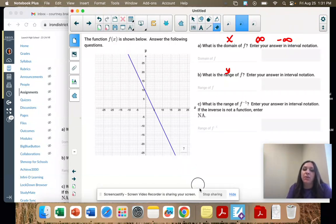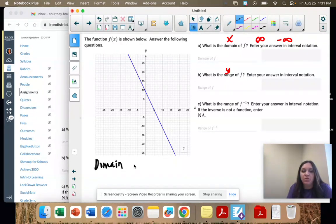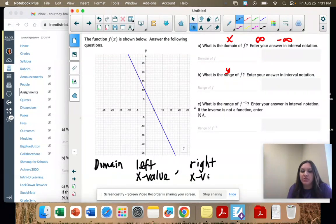All right, so domain, you write the most left or negative x value, comma, and then the most right or positive x value. So look to the left of the graph and go down to the x-axis. The answer is not negative 10 because it continues.